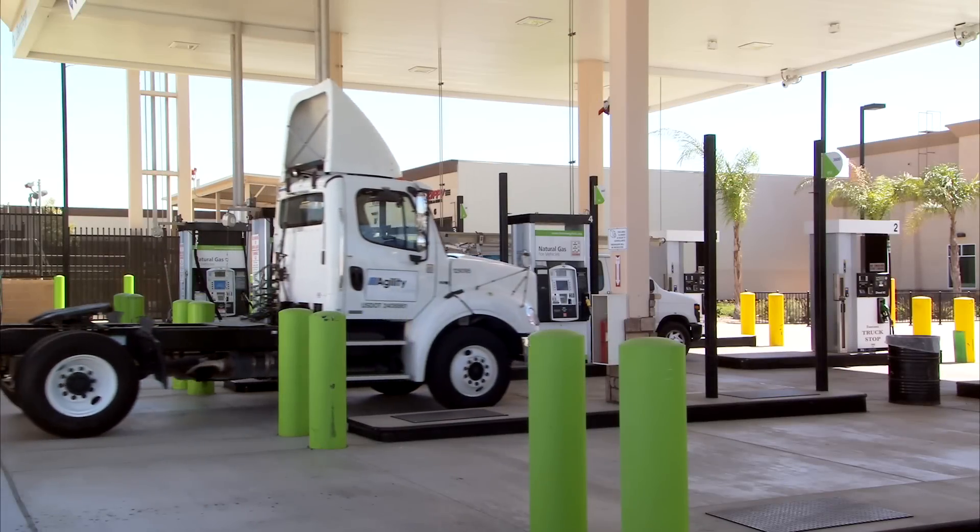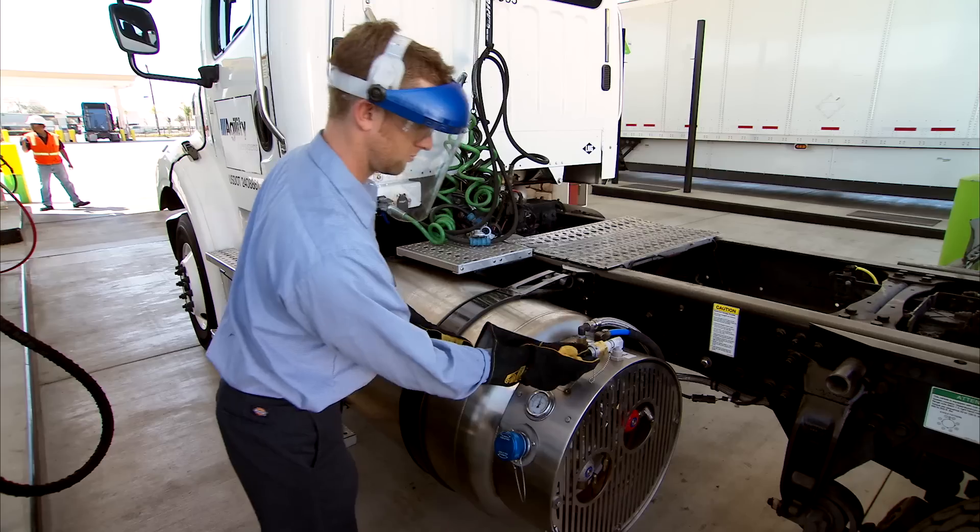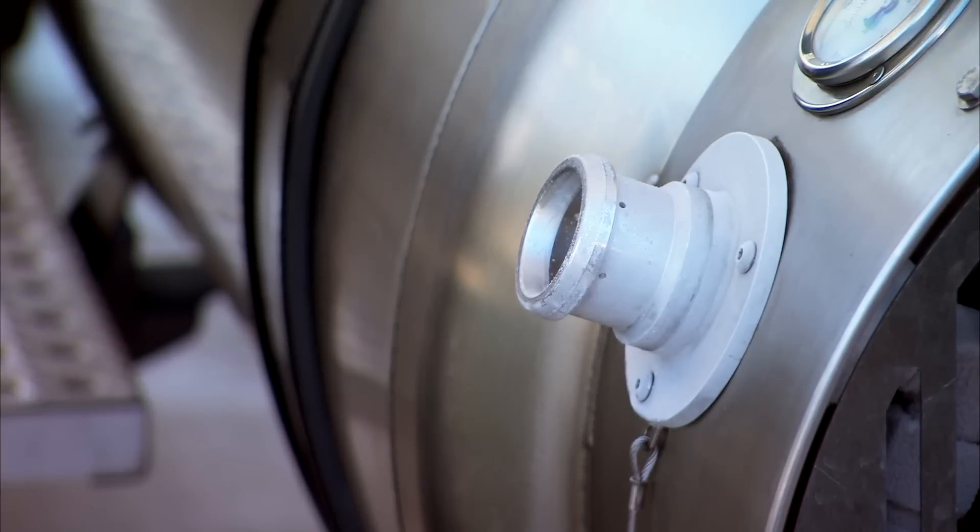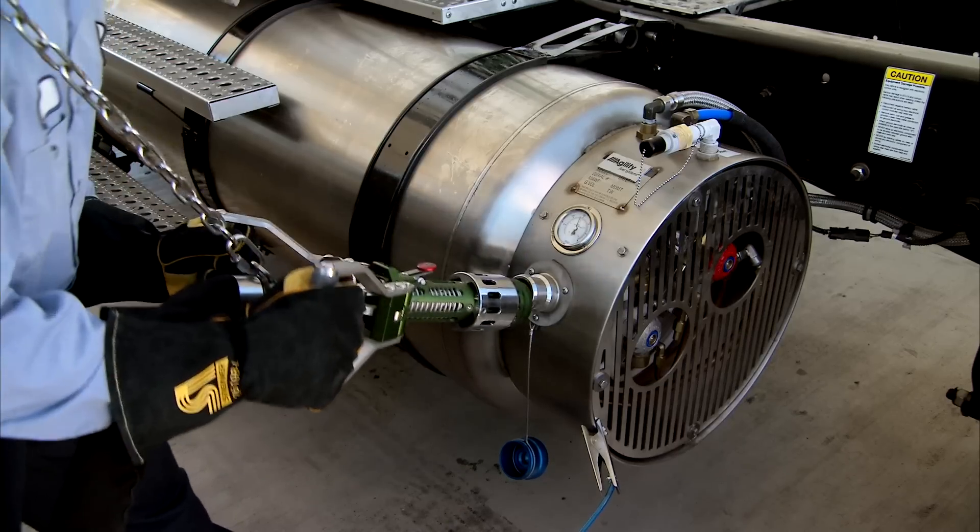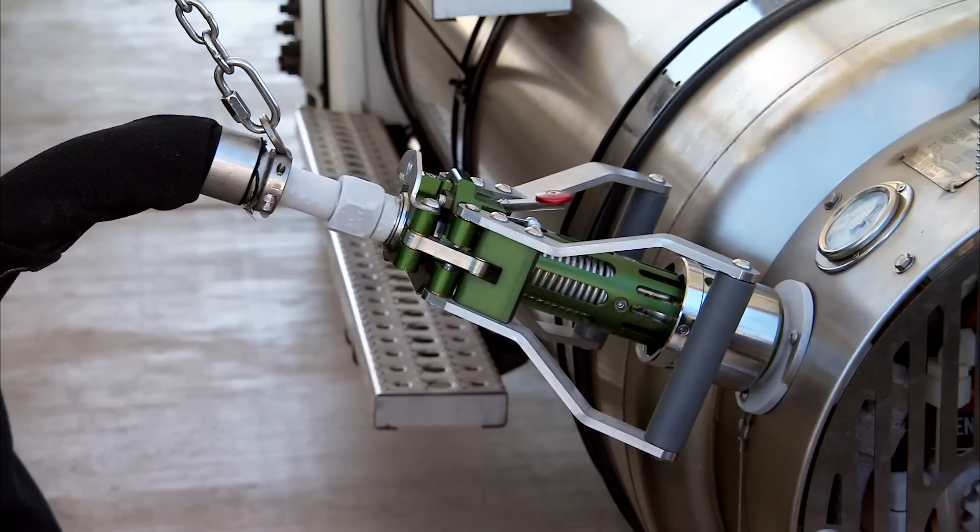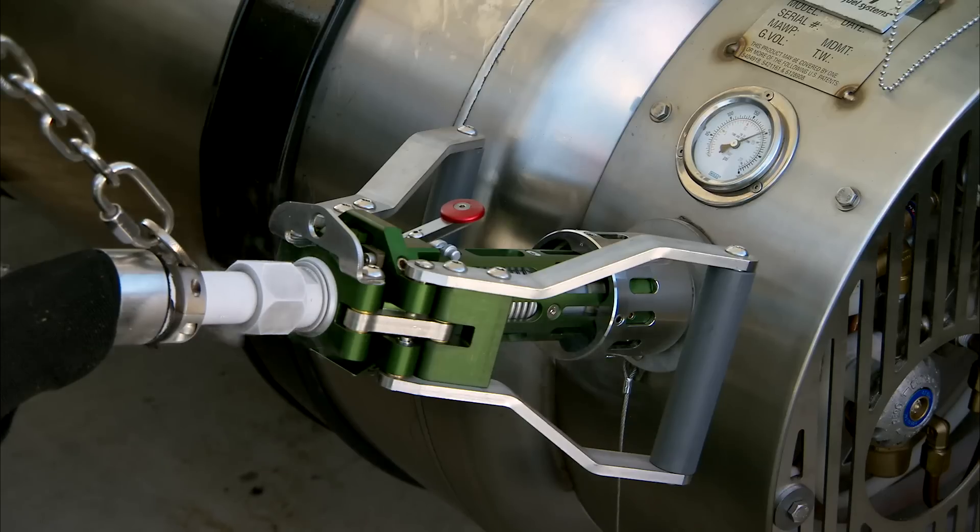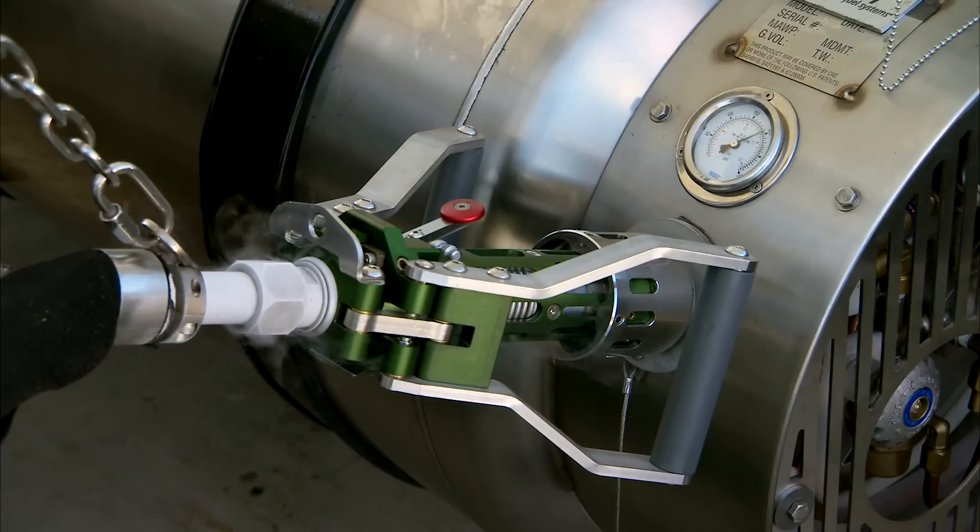Tanks are filled with LNG at the station through the fill receptacle. The LNG fuel fill receptacle is a pressurized connection and requires a positive lock with the station nozzle for fuel to flow. Agility LNG systems are designed to fill as quickly as possible, achieving a fill rate as fast or faster than conventional diesel fuel systems.